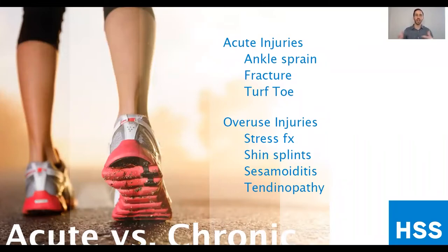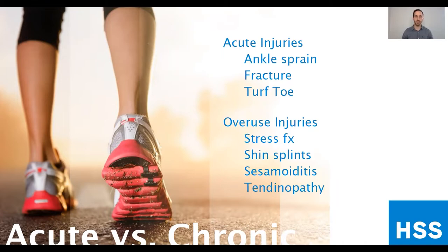There are acute injuries and chronic injuries. Acute injuries are typically a one-incident type — for example, a twisted ankle, which is an ankle sprain. Overuse injuries occur when repetitive use causes a problem and the body can't keep up with the demands or heal in time. Common acute injuries include ankle sprains, fractures in the foot and ankle, and turf toe — a hyperextension of the great toe. Common overuse injuries include stress fractures, shin splints, sesamoiditis (two small bones in the front of your foot that can get irritated, especially in runners), and tendinopathy, which is an injury to one of the tendons in the foot and ankle.